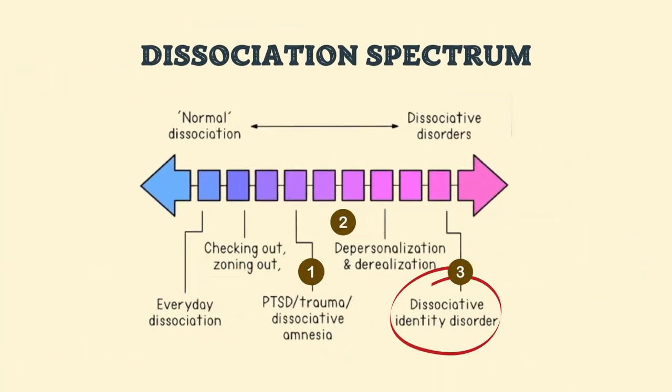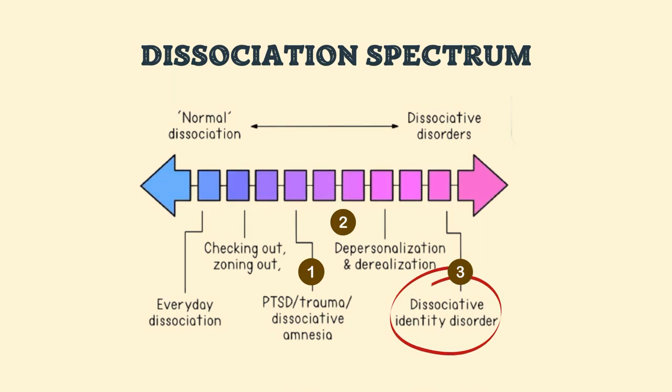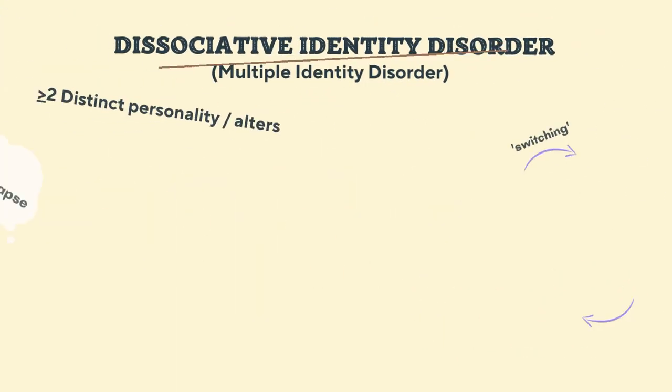Dissociative Disorder is classified into three main types: Dissociative Amnesia, Depersonalization Disorder, and Dissociative Identity Disorder. Each of these disorders falls along the dissociation spectrum based on their severity. Dissociative Identity Disorder, which is what we are going to focus on today, has the highest severity among the others.